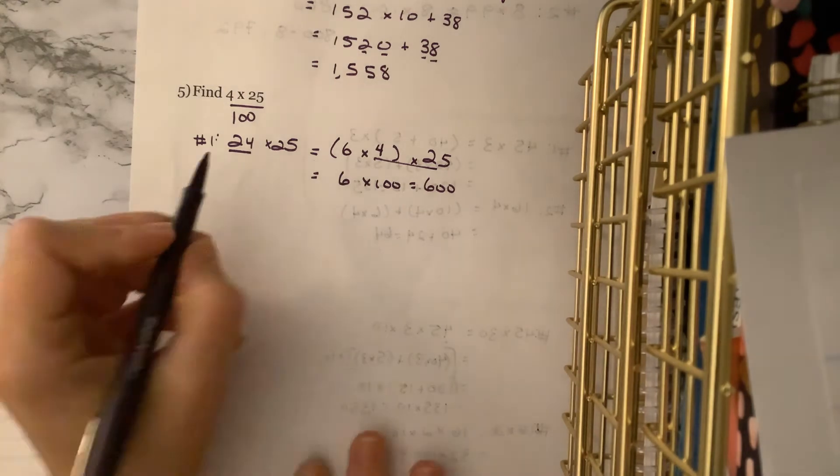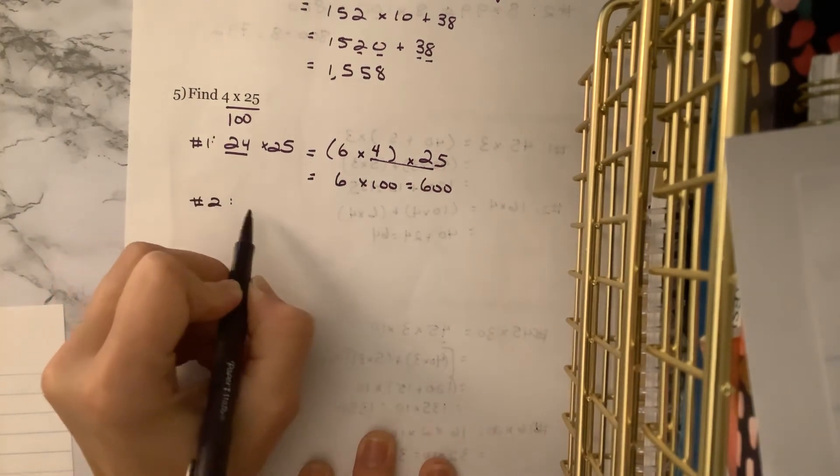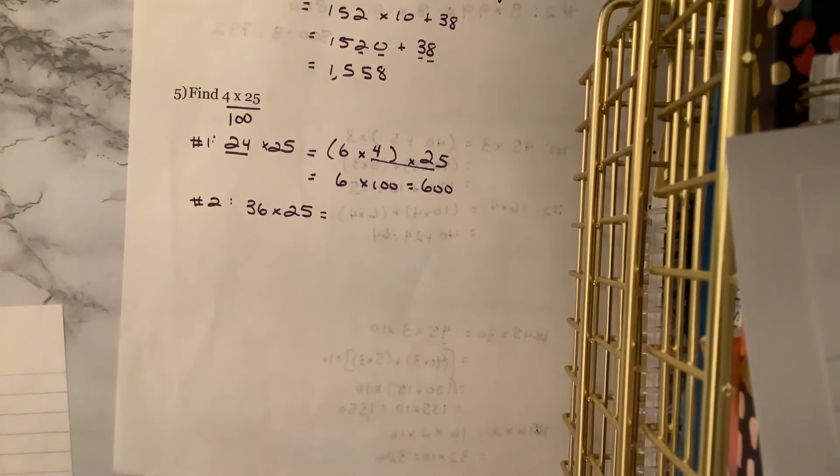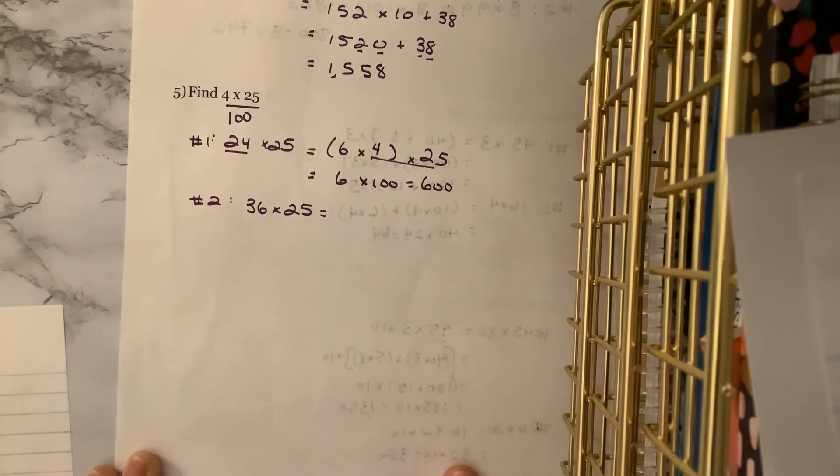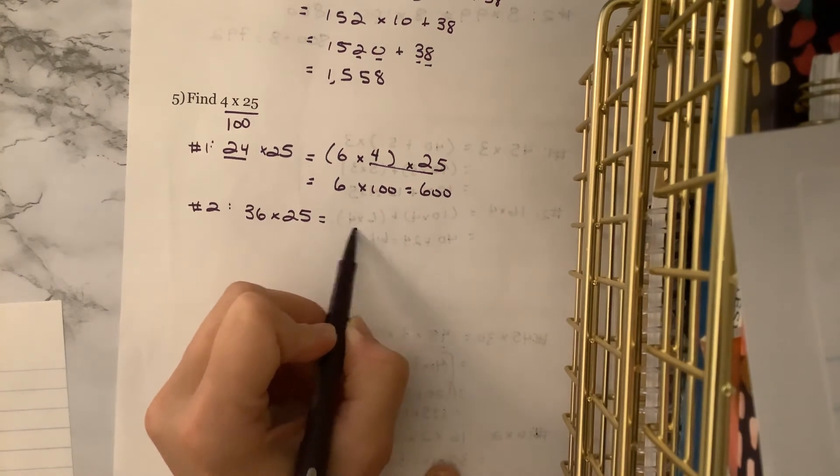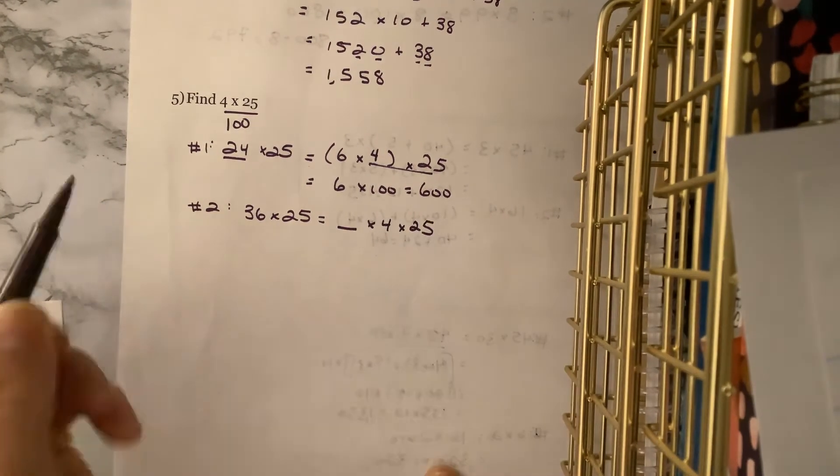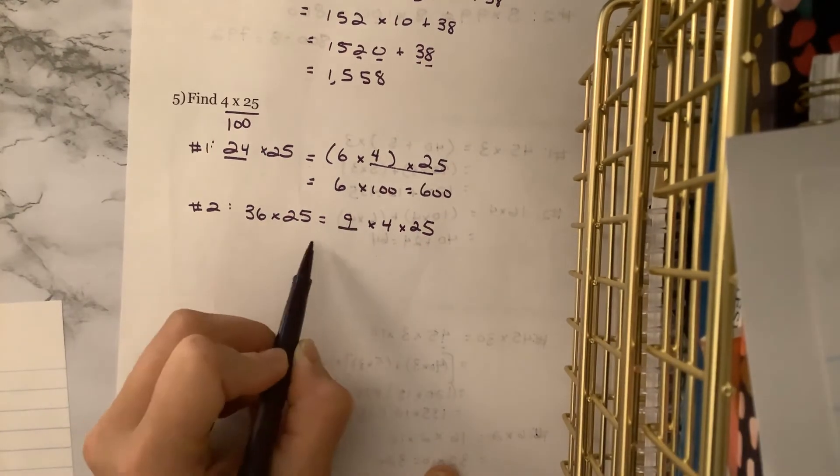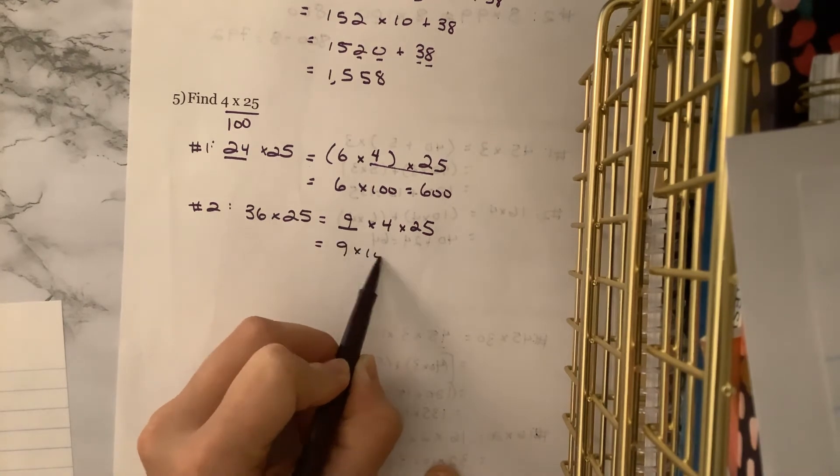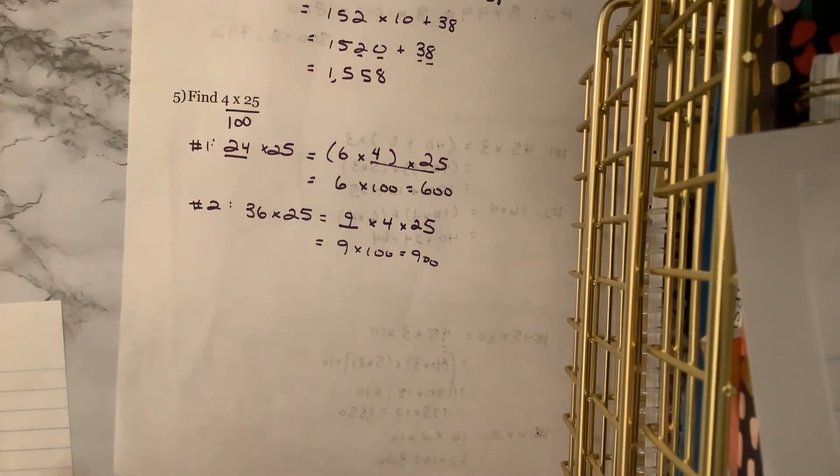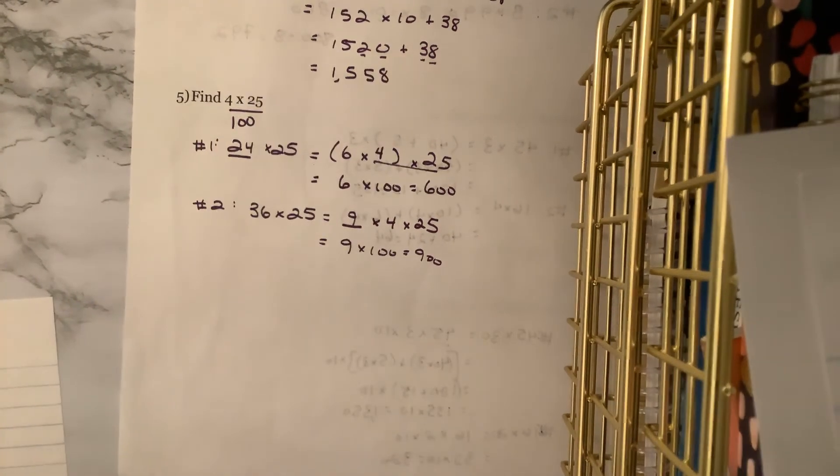So now you can kind of see, fifth graders, this strategy isn't going to work every single time, and that's true for all of our strategies. This is only a strategy that will work if one of the factors can be broken into 4 times something, and also if you have a 25 here, okay? So we're trying to get to something times 4 times 25. So what times 4 will get us 36? 9 times 4. So now we have 9 times 100, which is 900. I'm going to give you a little hint. Finding 4 times 25, you could also find 2 times 50 for the same reason.